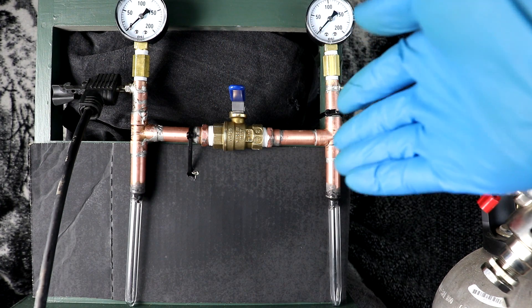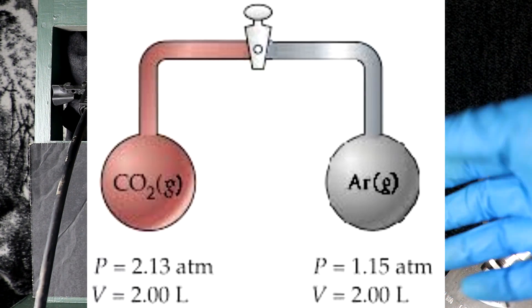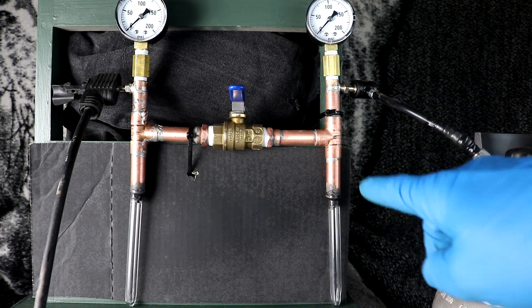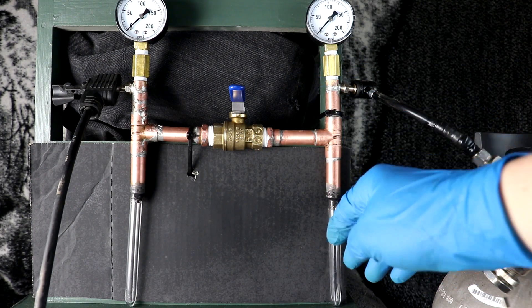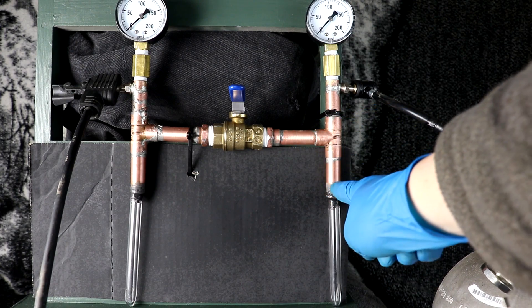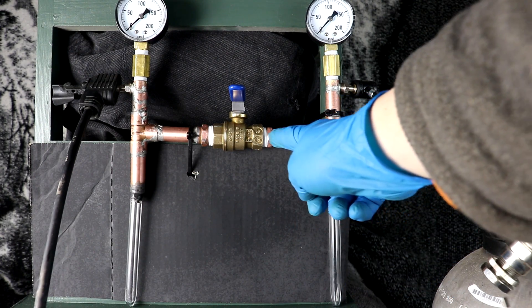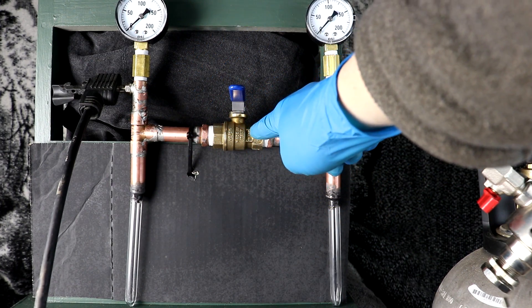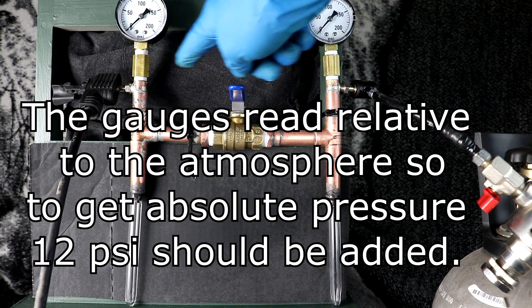This contraption is essentially just two containers, in this case the containers are just piping, connected via valve in the middle. Each of these containers has a pressure gauge so I can see what the pressure is and a way to put in and take off gases using these Schrader valves here.